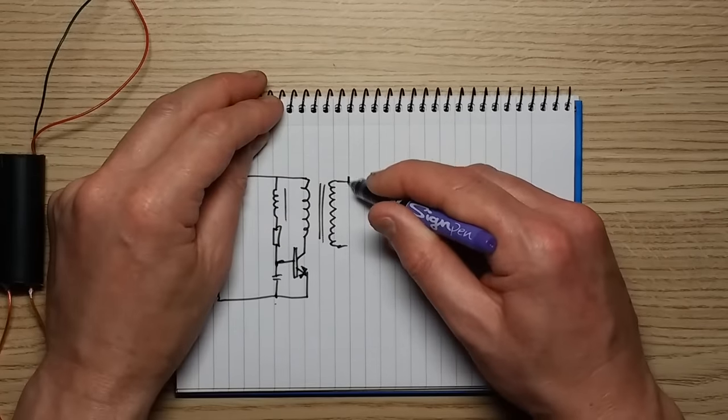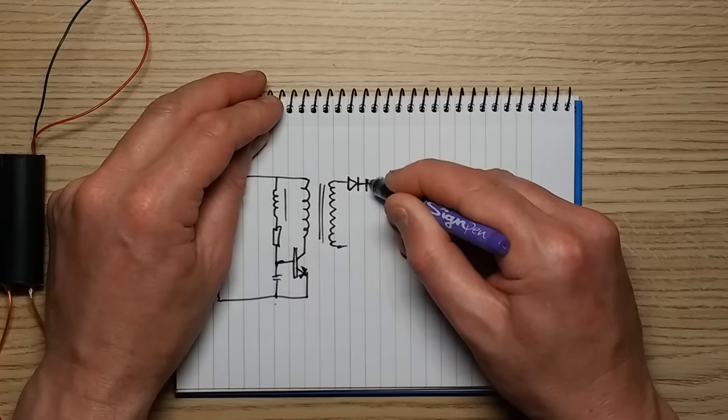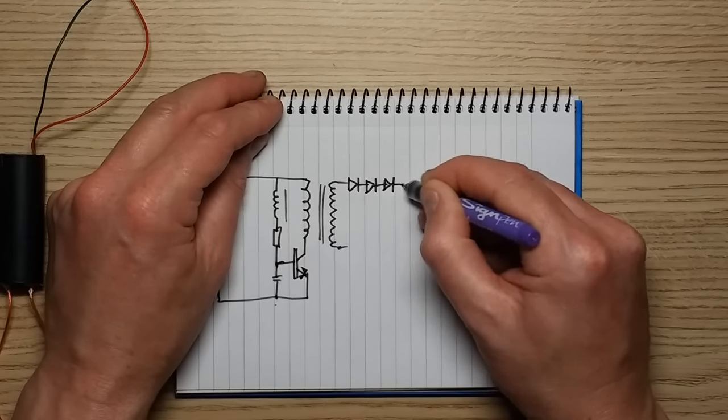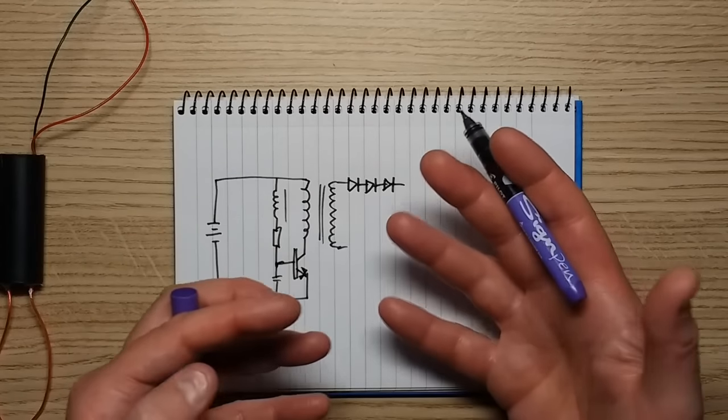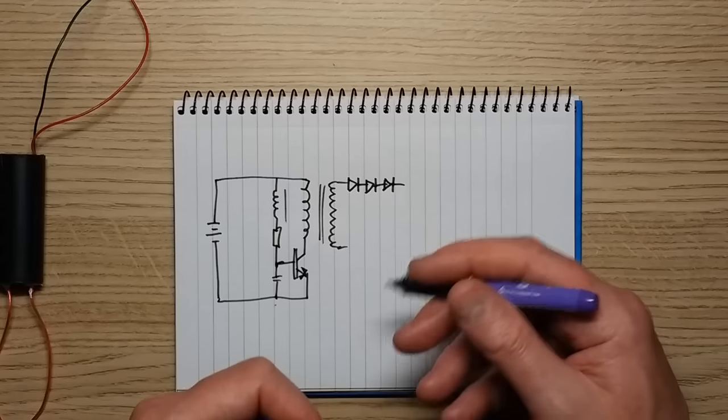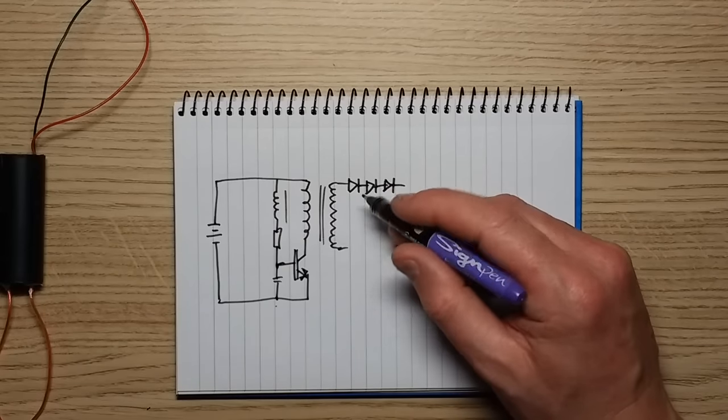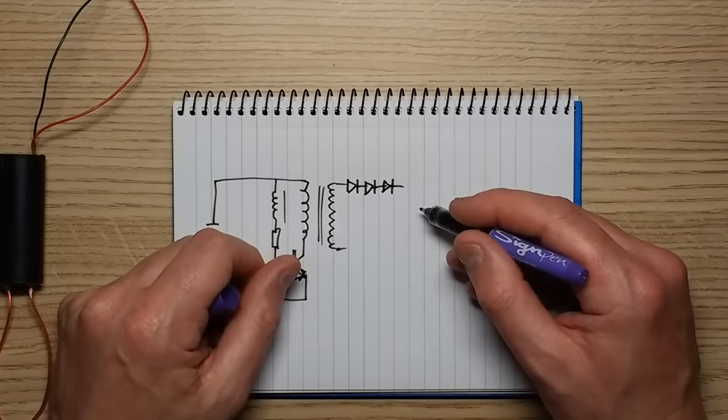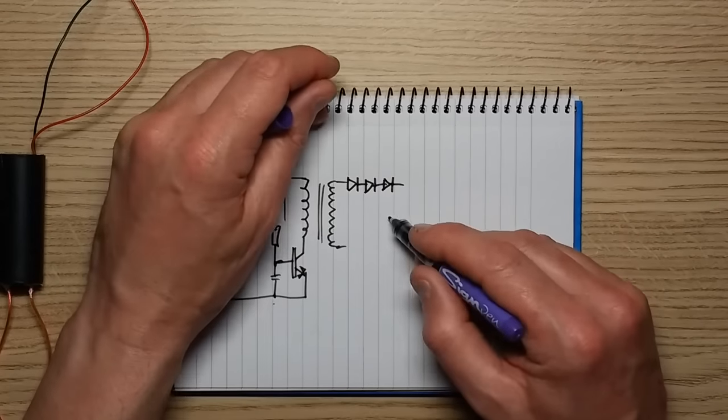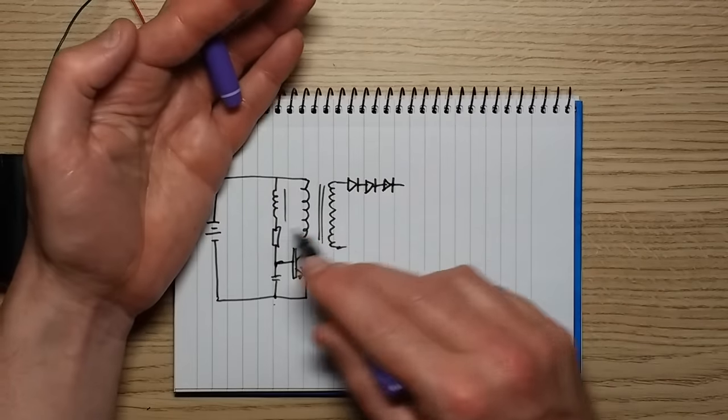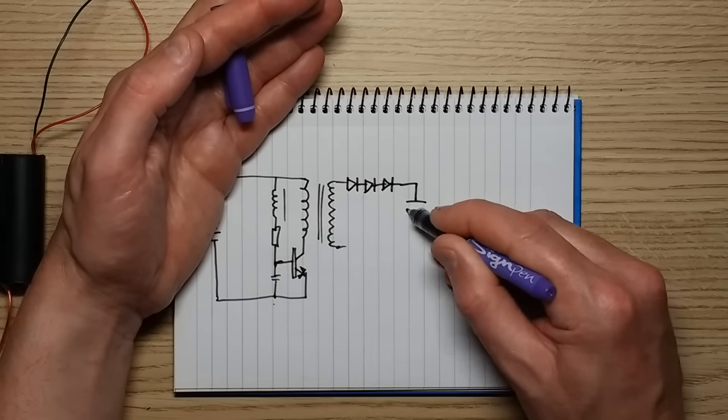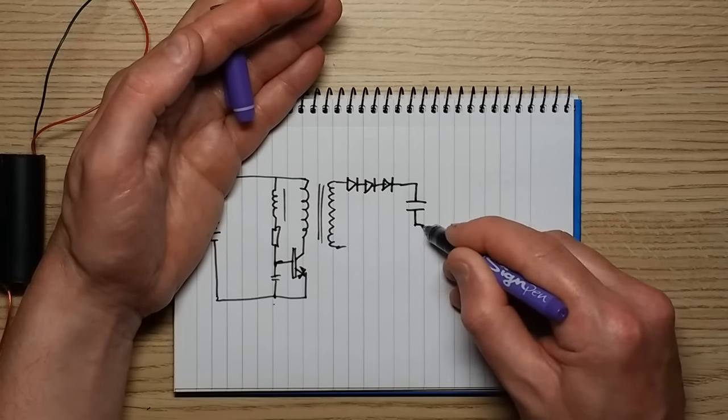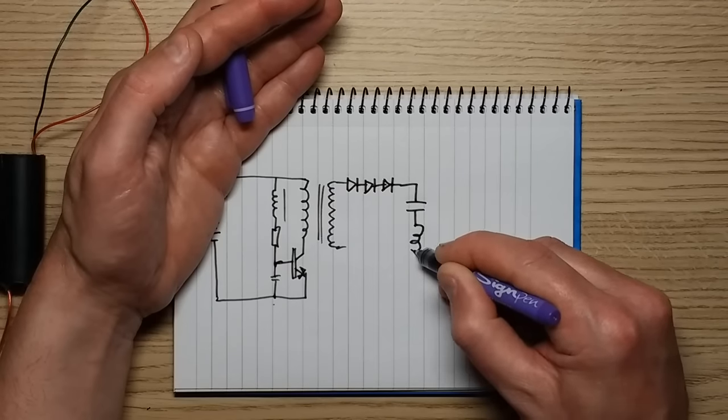So what they do is they then rectify that with a stack of diodes in series, usually typical one amp diodes, but the high frequency, fast recovery time diodes, which are needed for the high frequency operation of the transformer. That then charges a high voltage capacitor in series with a very heavy primary winding on a transformer.